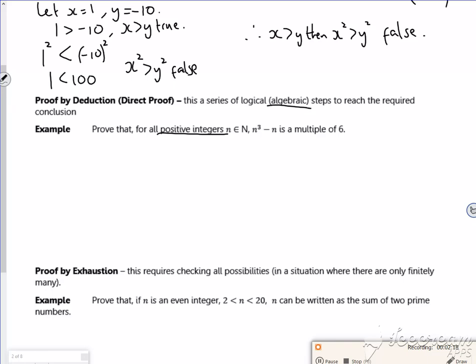Right, okay. So let's have a think about n cubed minus n then. Let's do some algebra on it. So I've got n times n squared minus 1.